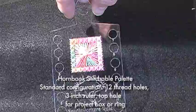Here is an example of the hornbook stitchable palette with a needle park cross stitched into the stitchable space. You can see that any color threads can be used.